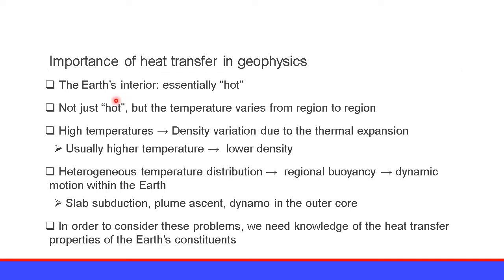Needless to say, the earth's interior is essentially hot. However, the temperature varies from region to region. High temperature produces density variation due to thermal expansion, and usually high temperature produces lower density. Therefore, the heterogeneous temperature distribution in the earth's interior produces regional buoyancy, causing dynamic motion within the earth.